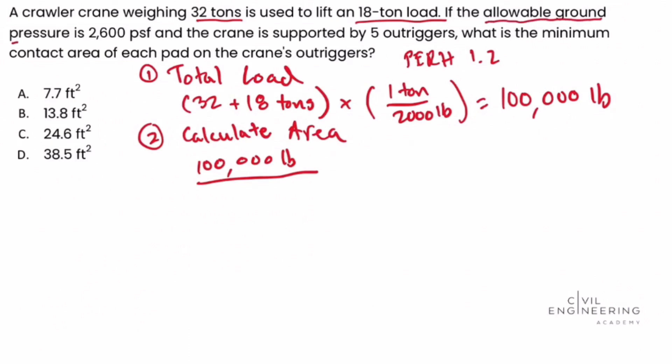And we look back in the problem statement, we see the allowable ground pressure is 2,600 pounds per square foot. So we'll divide that by 2,600. That's pounds per square foot. And that is equal to 38.46 square feet.